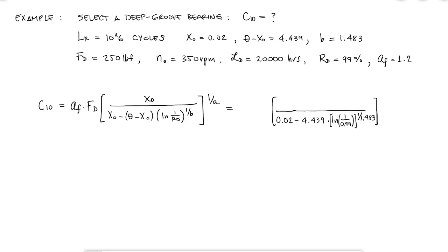I have the application factor and the load that my bearing is going to be subjected to, in pounds, so I know that C10 will be in pounds as well. A deep groove bearing, if I don't know what that is, would be looked up and found to be a ball bearing, so A would be equal to 3.